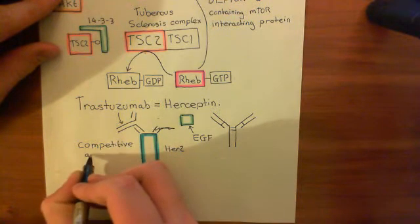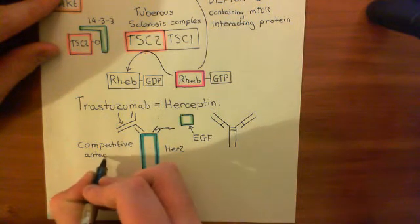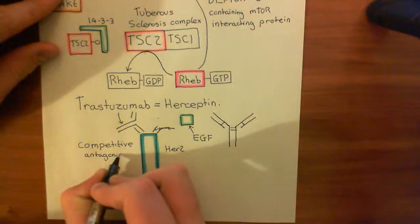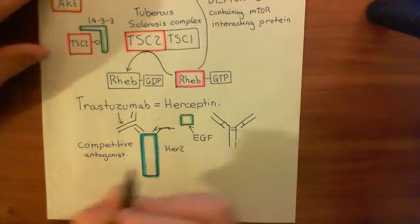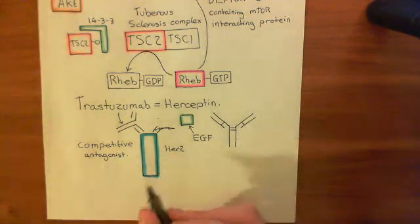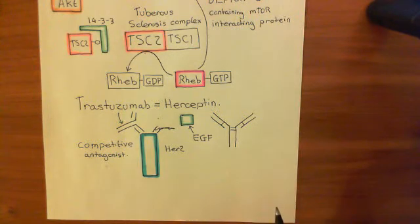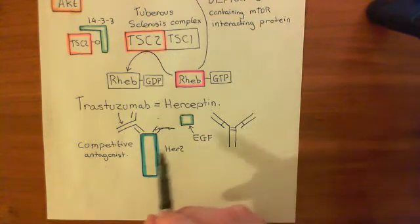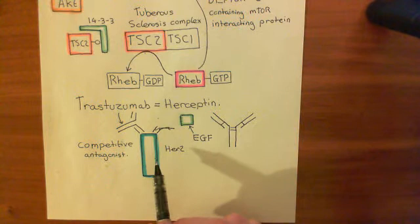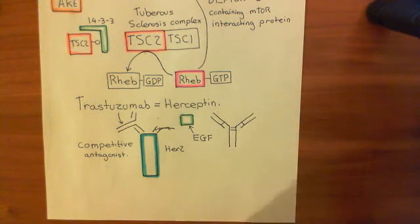Now, if you give this drug, then even if you have a HER2 amplification, the drug is going to stop the EGF from acting on the HER2. So if EGF can't bind to HER2 and can't activate it, then you don't get activation of the MAP kinase ERK pathway, and you don't get activation of the PI3 kinase AKT mTOR pathway, so you don't get overdivision.